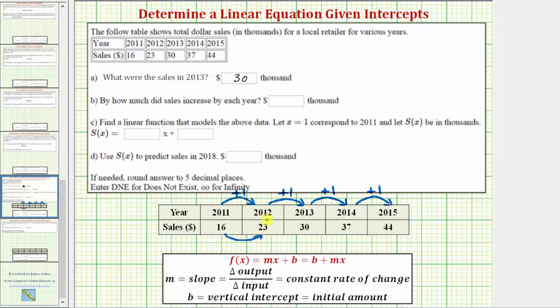So an increase from 16 to 23 is an increase of seven. And also notice how 23 plus seven is 30, 30 plus seven is 37, and 37 plus seven is 44. Because the second row shows an increase of seven, and the first row shows an increase of one, we know the sales increased by $7,000 each year.